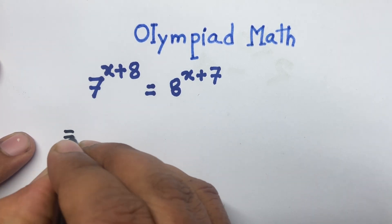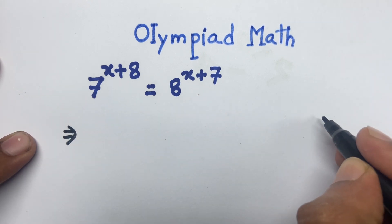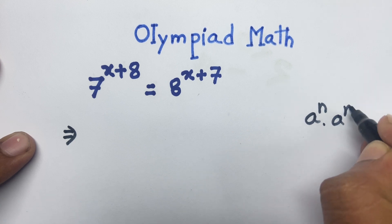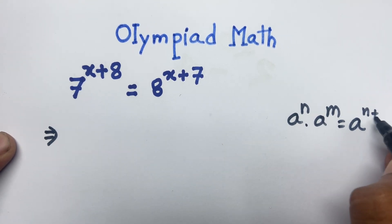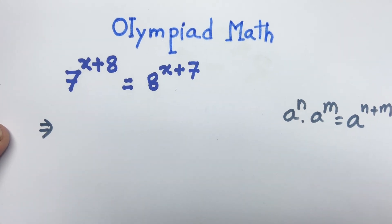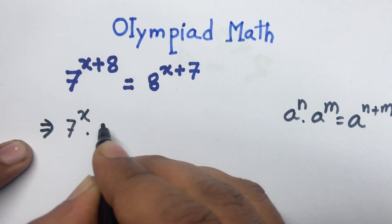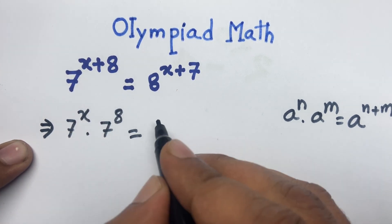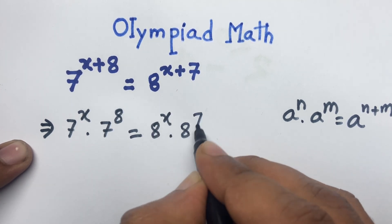First of all, according to exponential rules, we know that a to the power n times a to the power m equals a to the power n plus m. Following this formula, I can write 7 to the power x times 7 to the power 8, equal to 8 to the power x times 8 to the power 7.